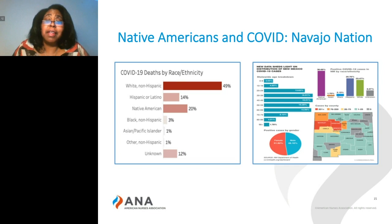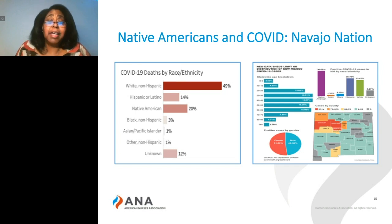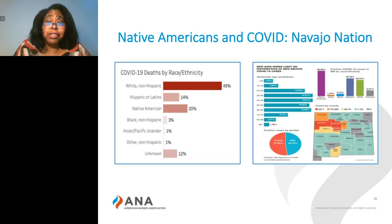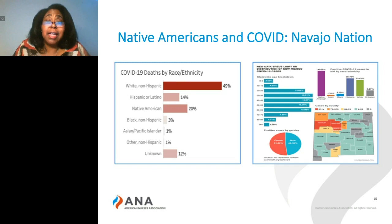So because of this, we see that in Arizona, although Native Americans only make up 5% of that population, they're currently 20% of the COVID deaths, whereas Latinos and whites have lower deaths than their actual percentage of population. The same for New Mexico, where the population is 11% Native American, but 37% of the COVID deaths, and those age ranges are between 20 and 69.